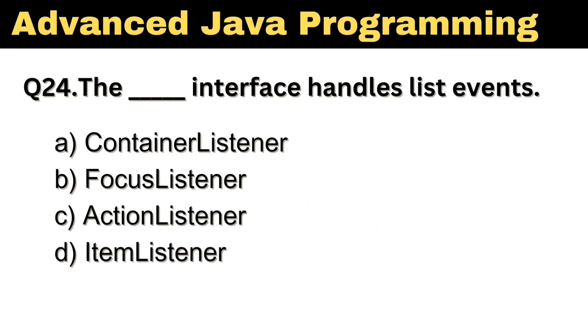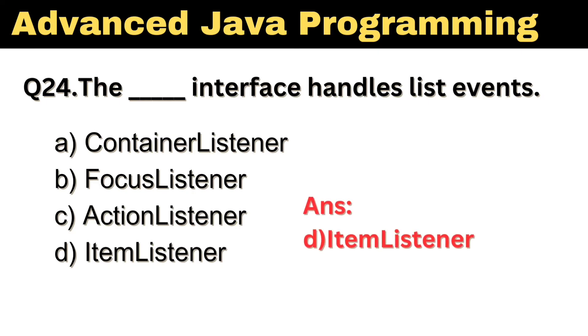Question number 24. Which interface handles list events? The right answer is option D: Item Listener.